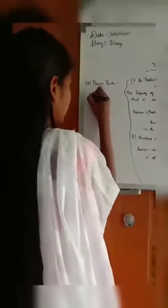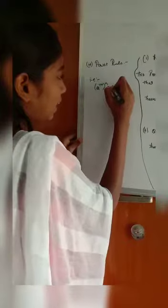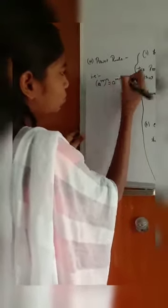So here that is, a to the power of m bracket n is equal to a to the power of m n. So this property is called the power rule.